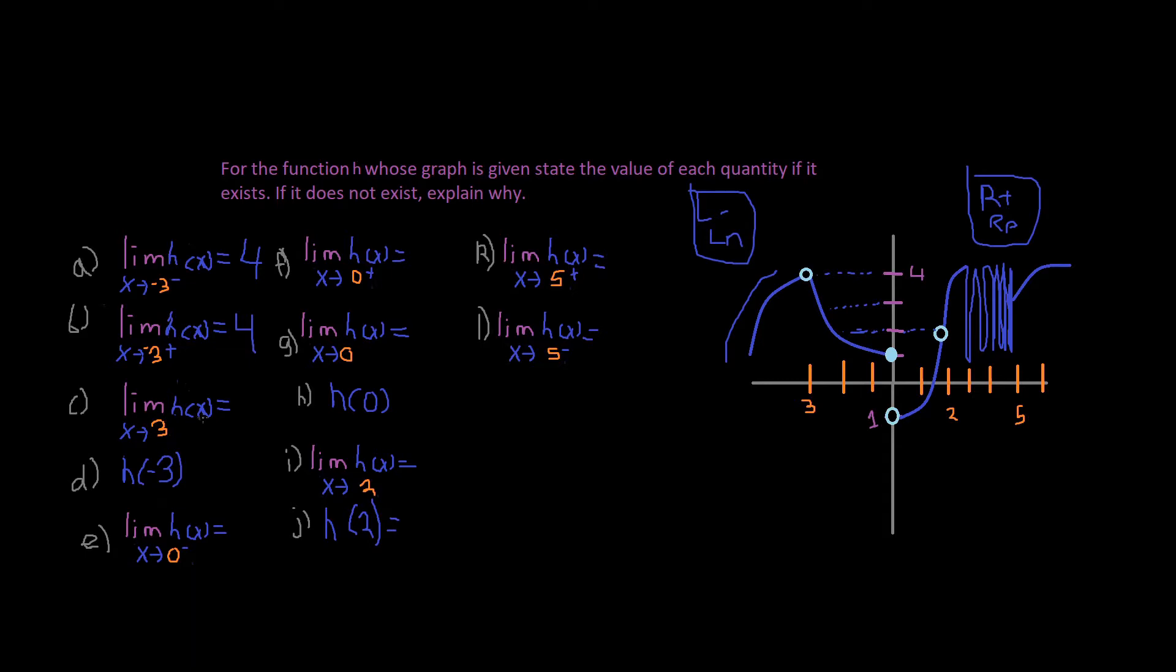Now it says limit of h of x as x approaches negative 3. So it would be 4. And why? Because these two are true. If the limit approaches from the left side and the right hand side, then our standard limit, standard definition of limit exists. So this is true.